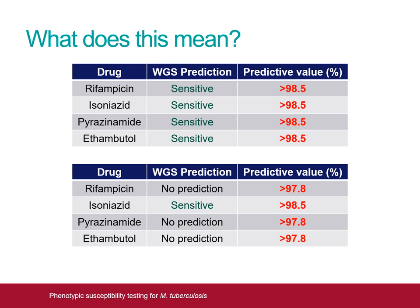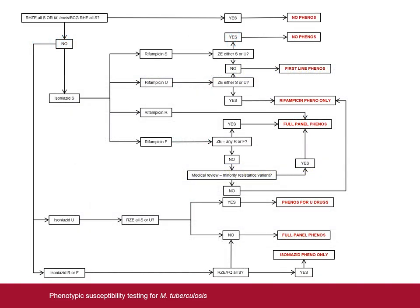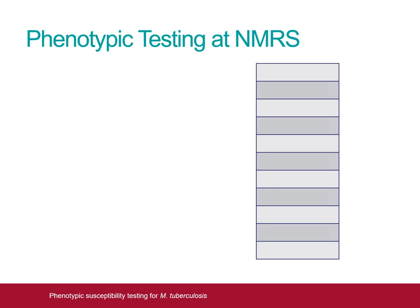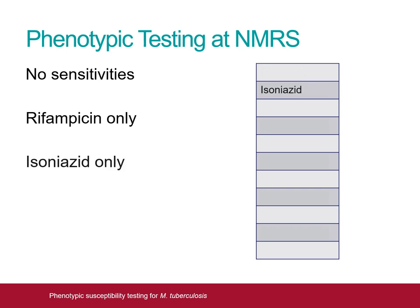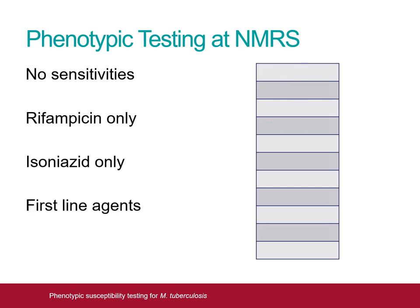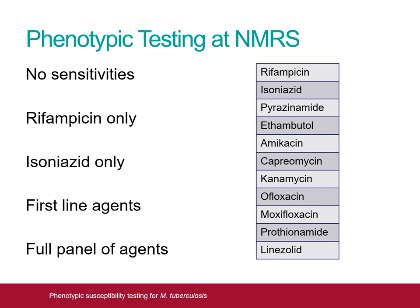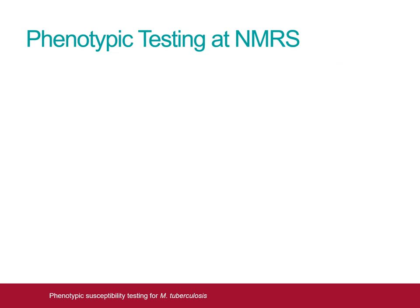The high accuracy of the NMRS WGS system now allows for a more streamlined approach to phenotypic susceptibility testing. Instead of performing first line testing on all isolates, with second and third line testing reserved for resistant isolates, the NMRS now performs targeted susceptibility testing utilising a branching algorithm based on WGS results. Many isolates will have no phenotypic testing performed. Some isolates will only have rifampicin testing, whilst others will only have isoniazid testing. All first line agents will still be tested in certain isolates, and a small proportion of isolates will undergo testing against a full panel of agents. We will now look at some example WGS antibiograms to explain how isolates are triaged into each of these groups.